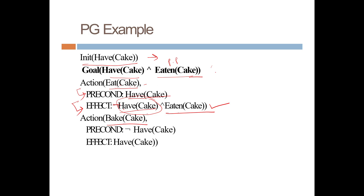So the Bake Cake action has precondition: not having cake, and effect: have cake. Now let's see how to draw this planning graph for this example. The planning graph will have some levels, so let's start with level 0.